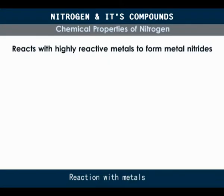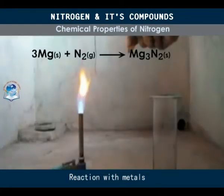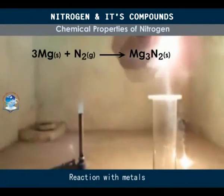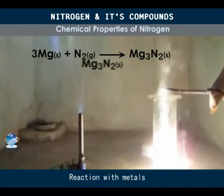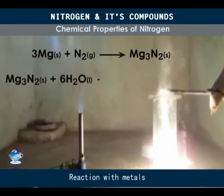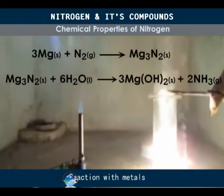Nitrogen will also react with highly reactive metals when heated to form metal nitrides. Examples of such metals are sodium, magnesium, and calcium. In particular, magnesium burns brilliantly in a jar of nitrogen to give magnesium nitride. The nitrides are easily hydrolyzed even by cold water, giving off ammonia and the metal hydroxide. Sulfur does not react with nitrogen even when heated.